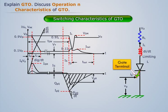To turn on the GTO, a positive gate current pulse is injected through the gate terminal. There is a delay between the application of the gate pulse and the fall of anode voltage, called turn-on delay time TD.